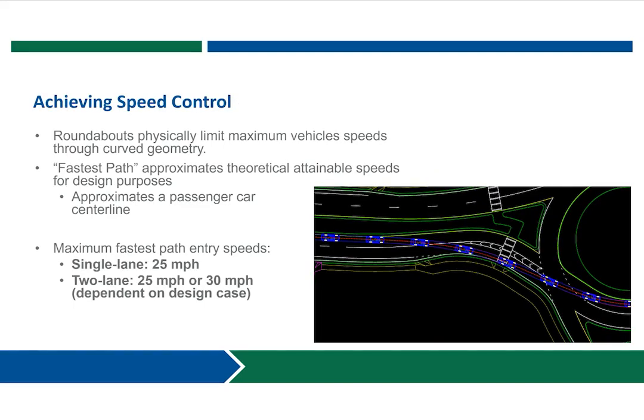The curved geometry of roundabouts is set up to physically limit vehicle speeds. We perform fastest-pass speed checks to evaluate the speed control provided by the design as vehicles travel along the various curved paths through the roundabout. The procedure approximates the centerline path of a passenger vehicle to identify theoretical attainable speeds for design purposes. An example of the fastest path is illustrated on this figure, where the red line represents the vehicle centerline as it hugs the various curb lines. The geometry should achieve entry speeds at or below 25 miles per hour for a single-lane roundabout. Maximum speeds for two-lane roundabouts vary by design case, as will be discussed further in subsequent slides.